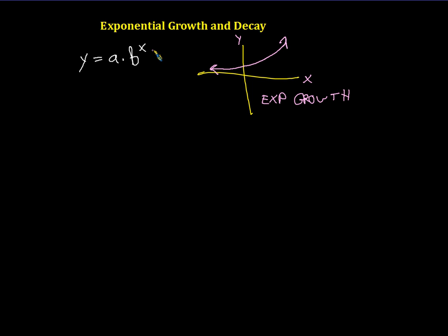And it turns out this function produces this graph. But we also have another look for the graph. Again, this is x and this is y. And the graph just as easily could go like this. And we have an entirely different name for this. This is called exponential decay.